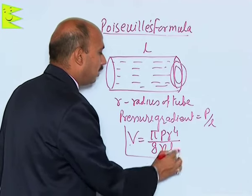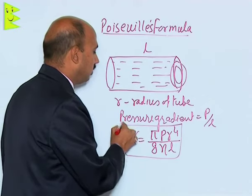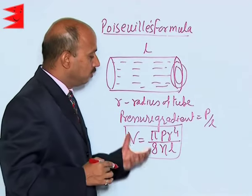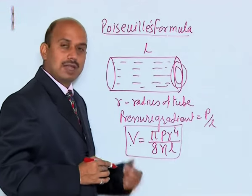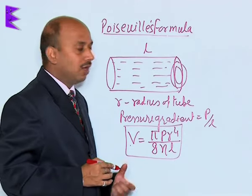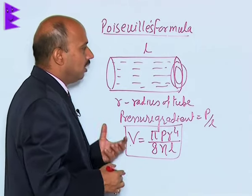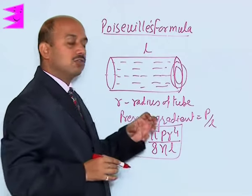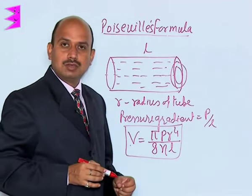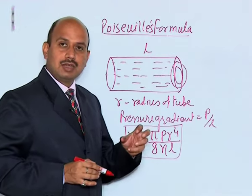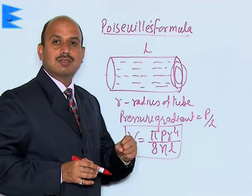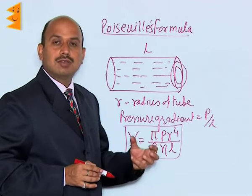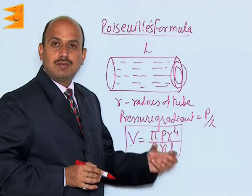This formula can be derived using dimensional analysis. In this case also, you will see the liquid which is flowing along the axis of this cylinder — the cylindrical layer closest to its axis has the greater speed, that is, a greater velocity.